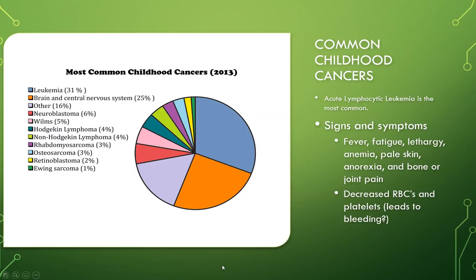The most common childhood cancer is leukemia at 31%, with acute lymphocytic leukemia being the most common type. Brain and CNS cancers make up 25%. Other solid tumors account for 16%. Neuroblastoma, Wilms tumor at 5%, Hodgkin's and non-Hodgkin's lymphomas each at 4%, rhabdomyosarcoma at 3%, osteosarcoma at 3%, retinoblastoma affecting the eyes at 2%, and Ewing's sarcoma at 1%.